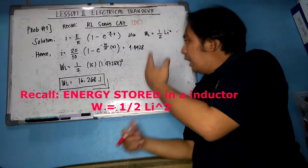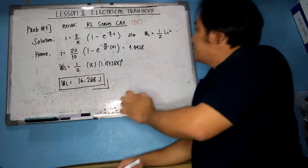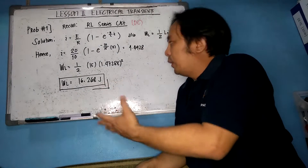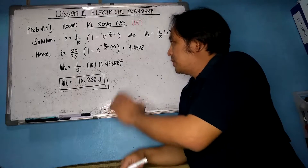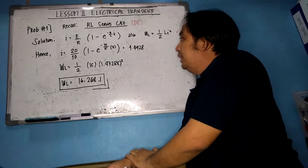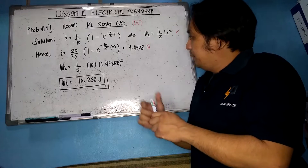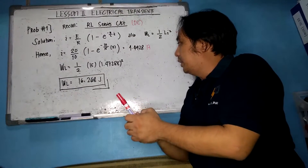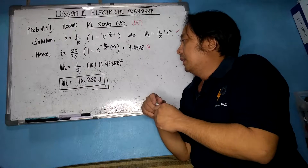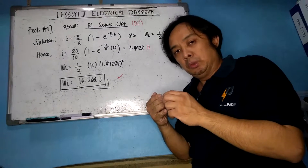Since we have an RL series circuit with a switch, there is a transient. Our main goal is to get the transient current first and then substitute it into the energy stored formula. Substituting the values: i = (20/10) × (1 − e^(−10/15 × 2)) = 1.4928 amperes. Then W_L = ½ × 15 × (1.4928)² = 16.268 joules.